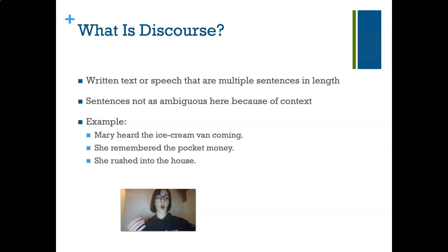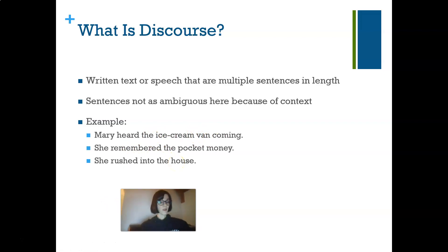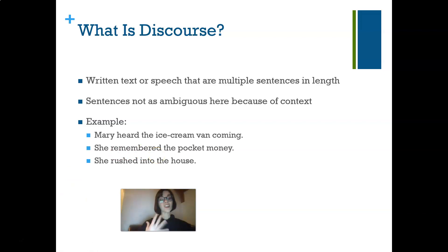Sentences in discourse are not as ambiguous because of context and world knowledge. For example: 'Mary heard the ice cream truck coming; she remembered her pocket money and rushed into the house.' Because we know ice cream costs money, we infer she's looking for money and running inside to buy an ice cream. From just three sentences, we fill in many blanks and draw numerous implications. Someone without this world knowledge would have a harder time understanding what these sentences mean.